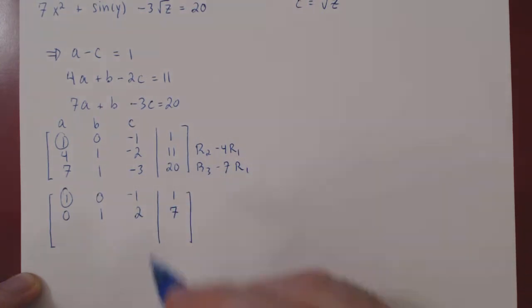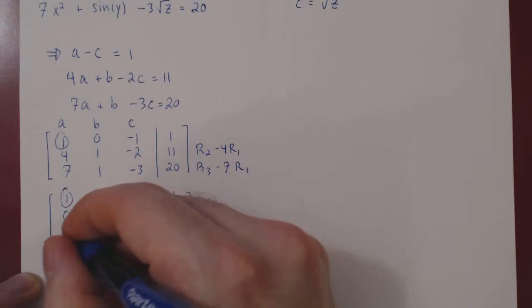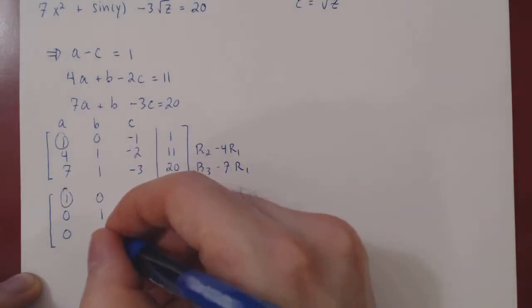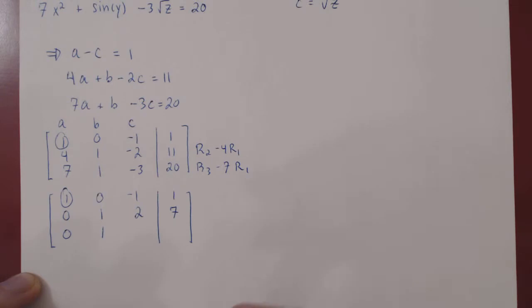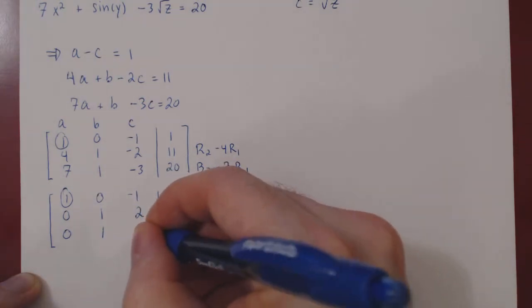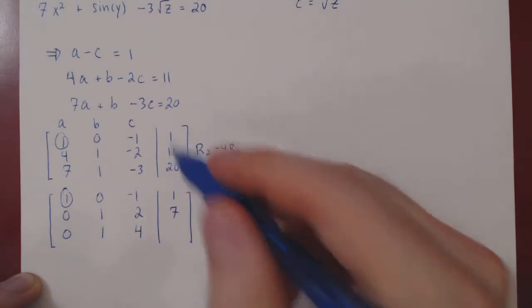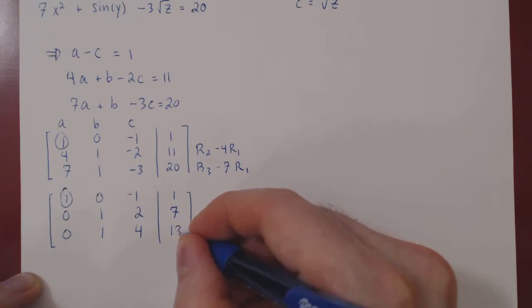Second row operation. 7 minus 7 is 0. 1 minus 0 is 1. Negative 3 minus 7 times negative 1 is plus 7, which is positive 4. 20 minus 7 times 1 is 13.